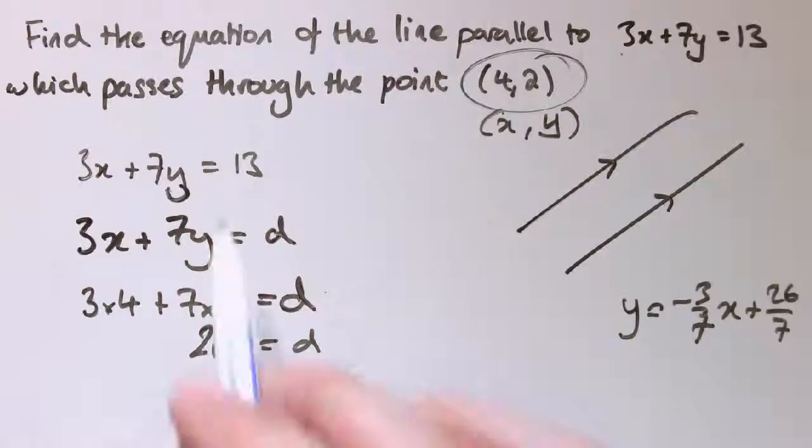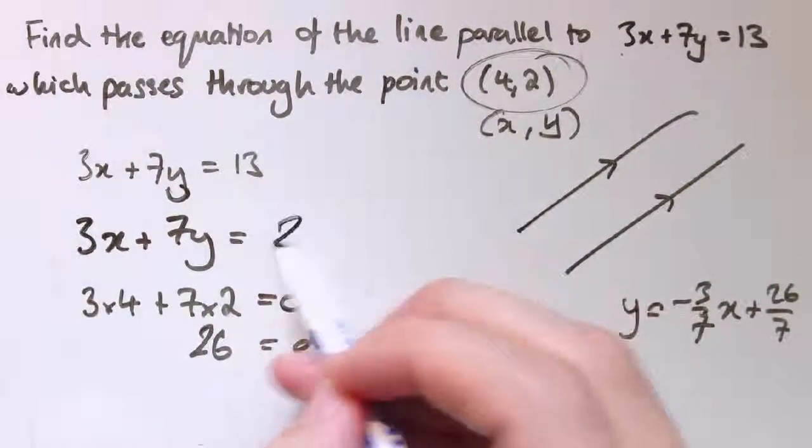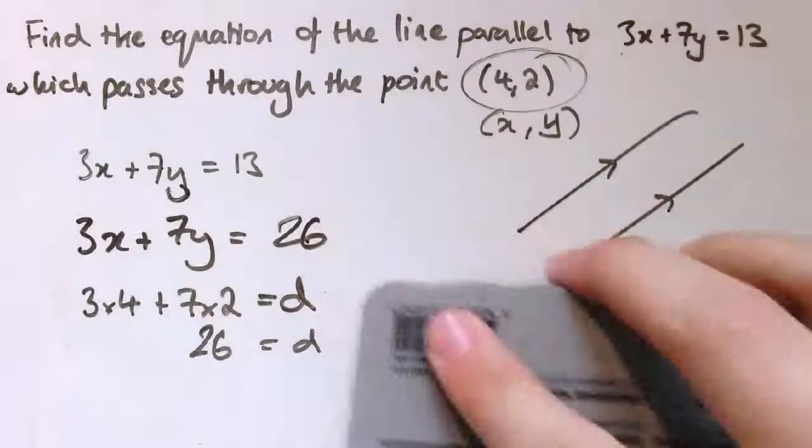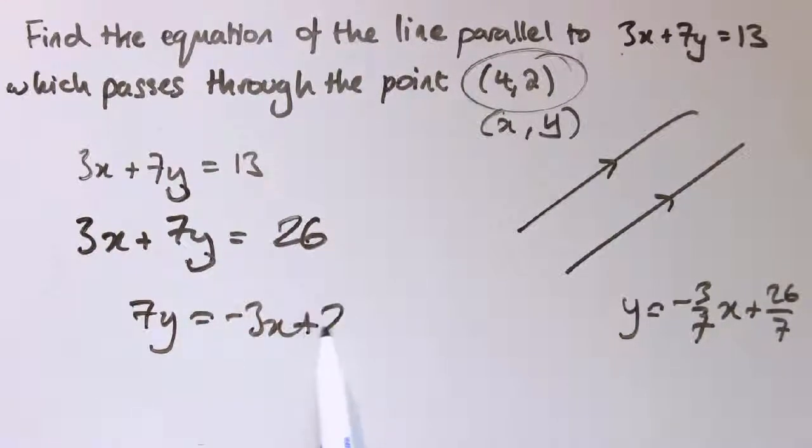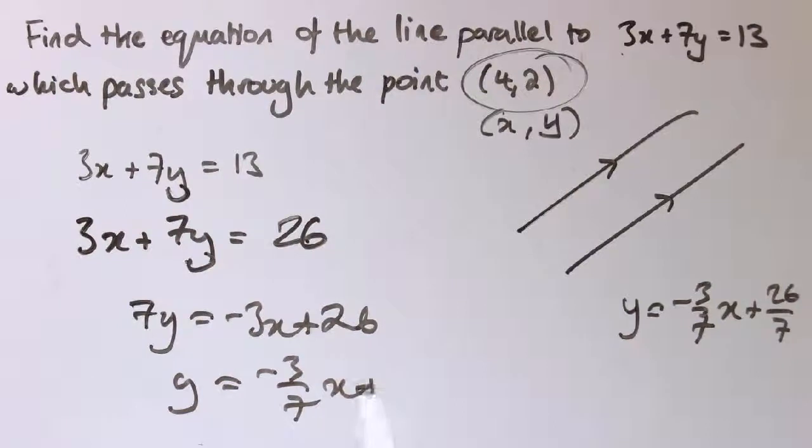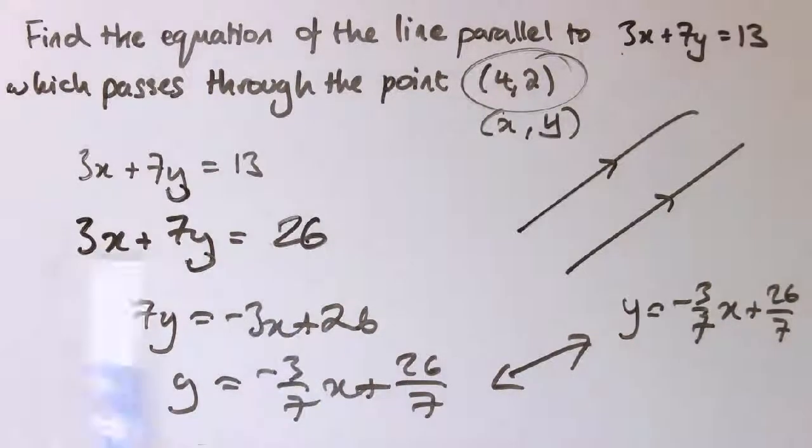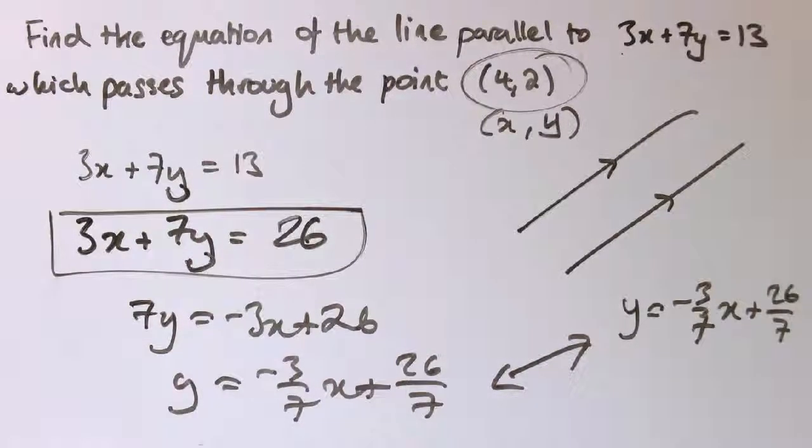So I found out then that this line is 3x plus 7y equals 26. And I would argue that's much simpler than having to go through y equals mx plus c every time. This is exactly the same as this line, because this one will rearrange to 7y equals minus 3x plus 26, and then dividing by 7, we get minus 3/7 x plus 26 over 7. So these two lines are exactly equivalent. But there was no need to do all of this. This is a perfectly good equation of a straight line.